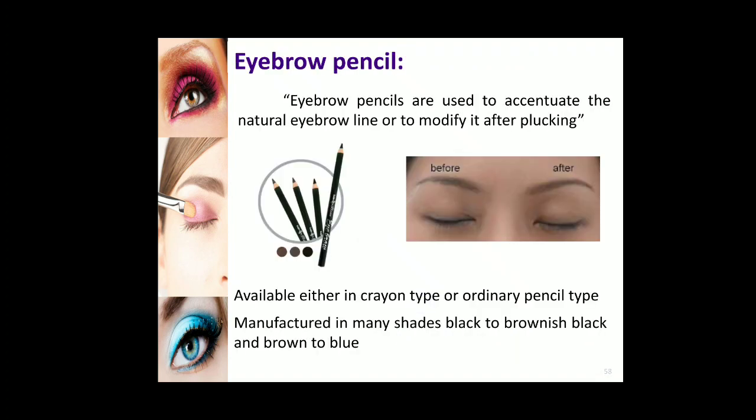Next are eyebrow pencils. Eyebrow pencils are used to accentuate the natural eyebrow line or to modify it after plucking. Most of the time eyebrows may be thicker or thinner, so eyebrow pencils are used to create a false appearance to alter the thickness of eyebrows.